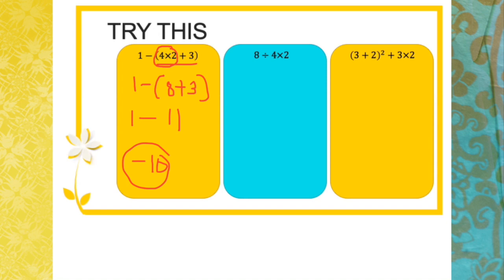Another example: 8 ÷ 4 × 2. Since division and multiplication are the same level, we evaluate from left to right: 8 ÷ 4 = 2, then 2 × 2 = 4.